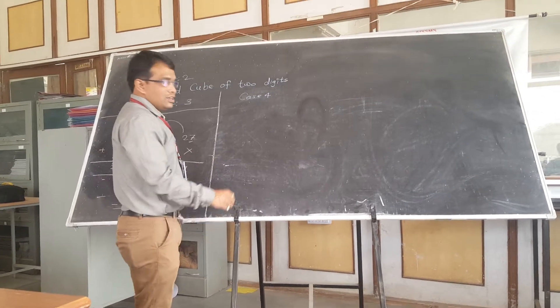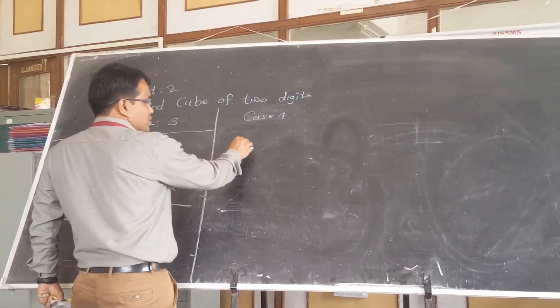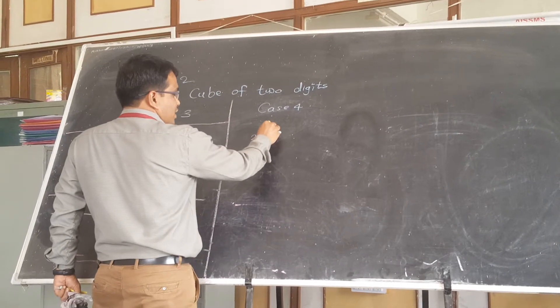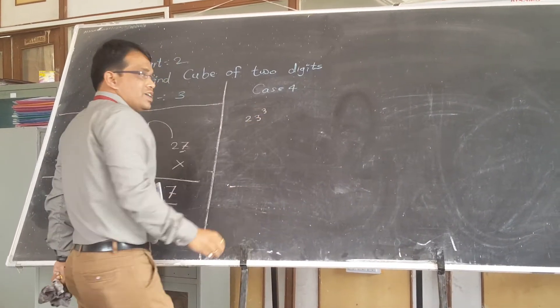Now in case 4, there is no relation between the 2 digits. Take a digit 23. I am interested to find the cube of 23.